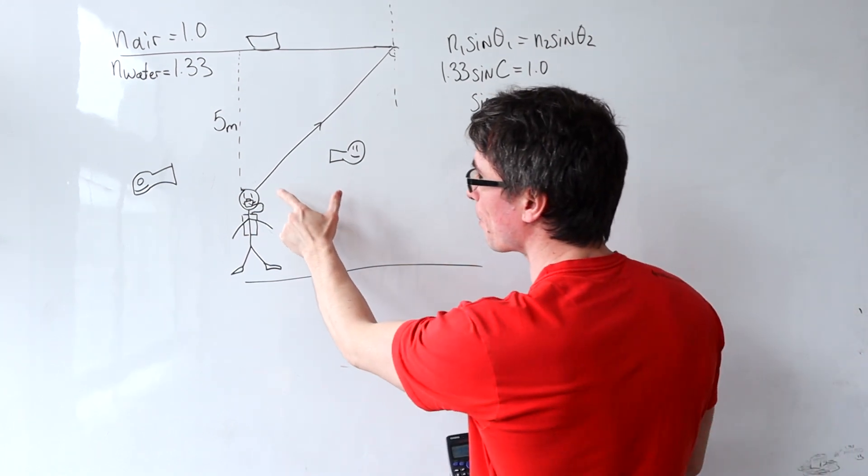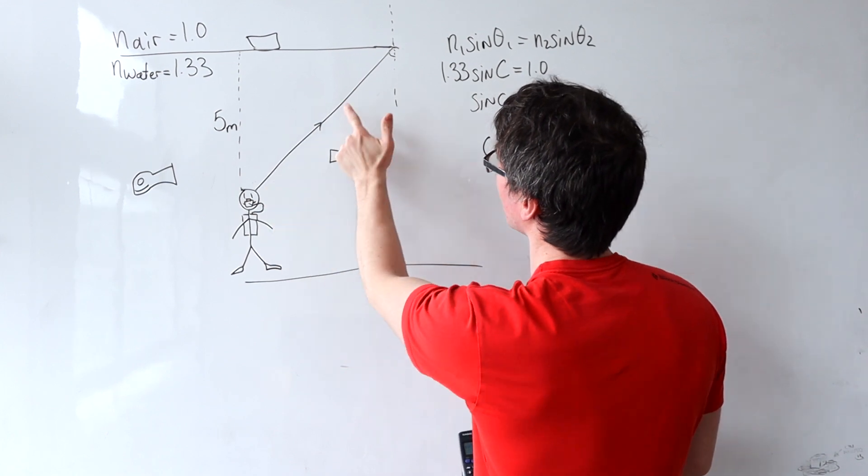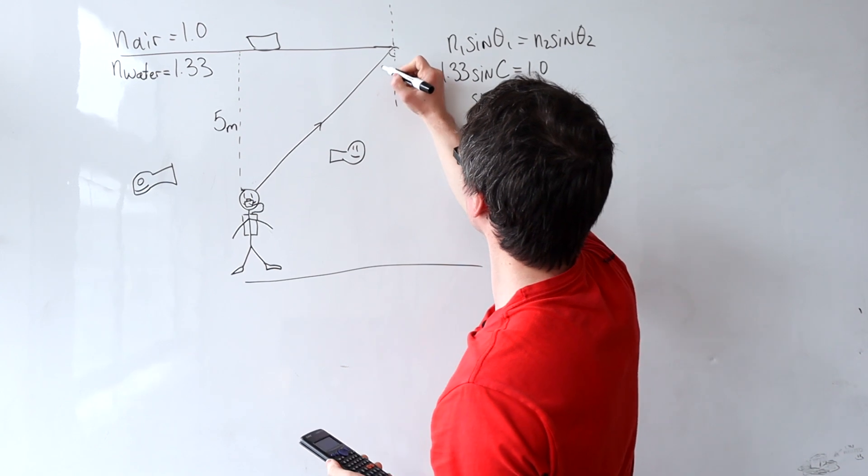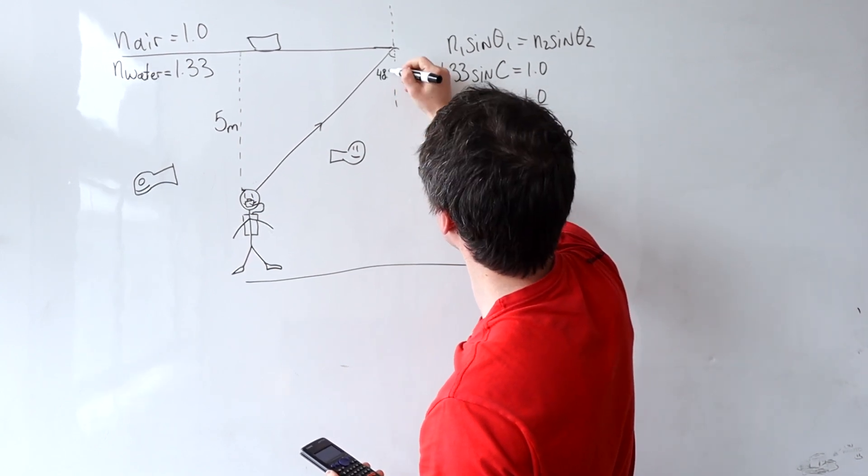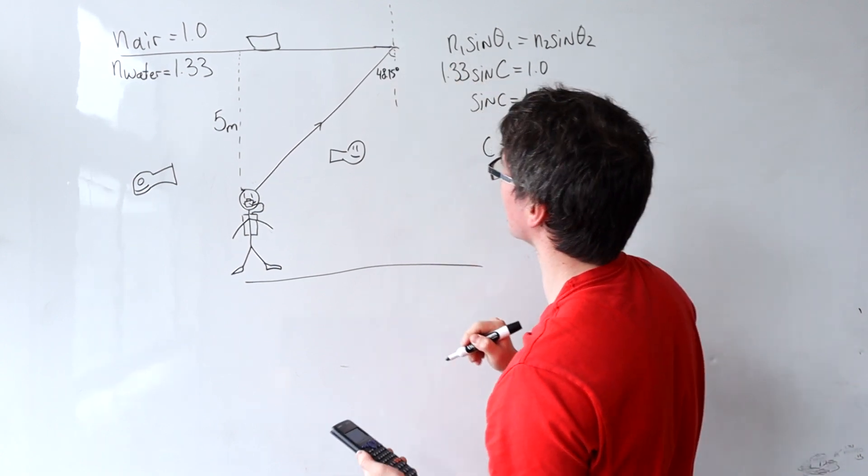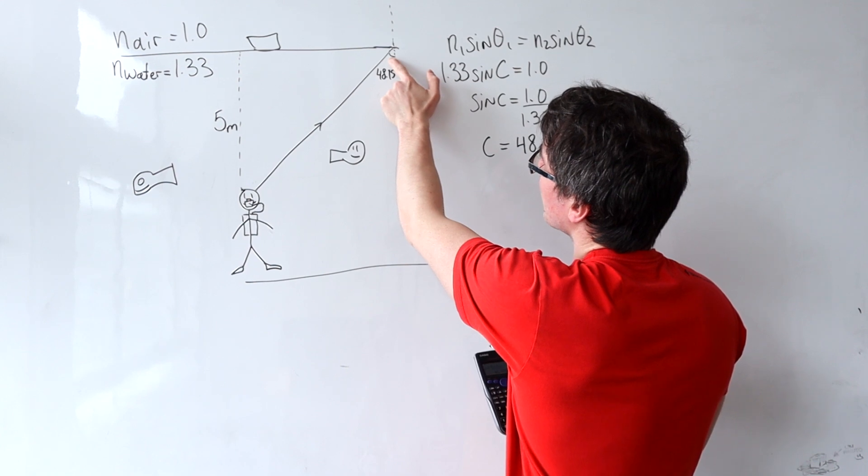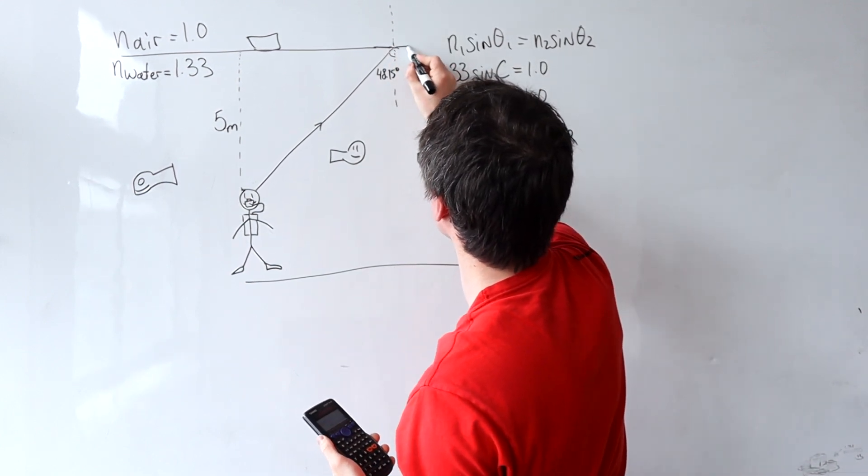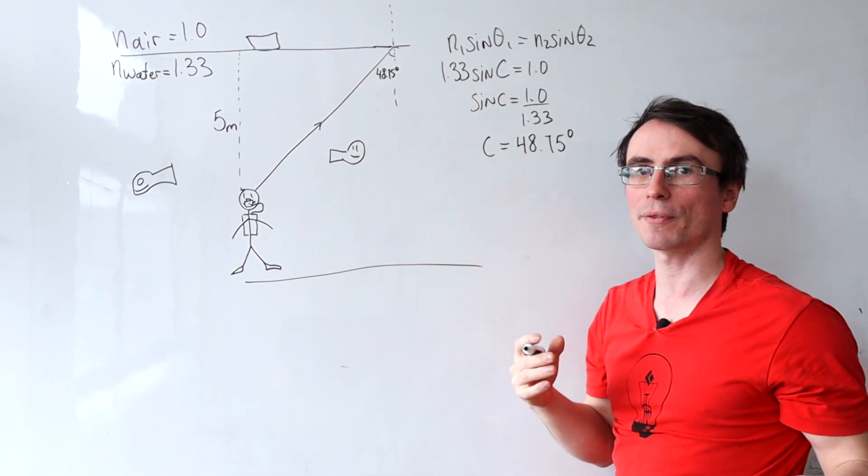Now what does that mean? As a point reflects light in all directions, when it reaches the surface, if the angle to the normal exceeds 48.75 degrees, then this light ray will not go through and be refracted, but will be trapped and totally internally reflected.